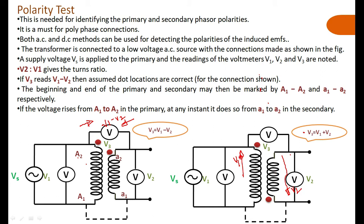What is the total voltage? It is V1 adding to V2, so the voltmeter reads V1 plus V2.